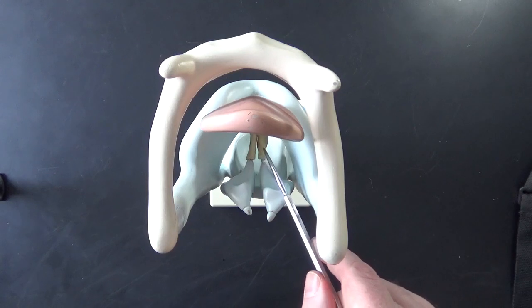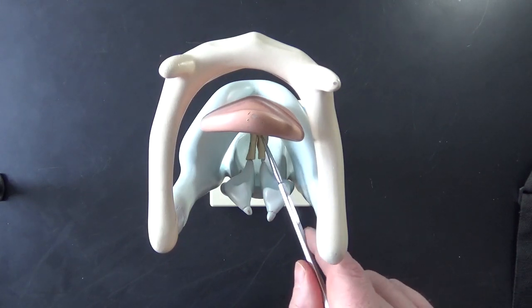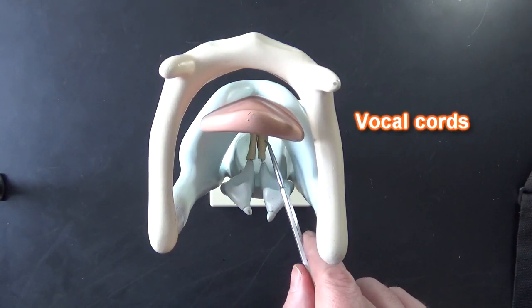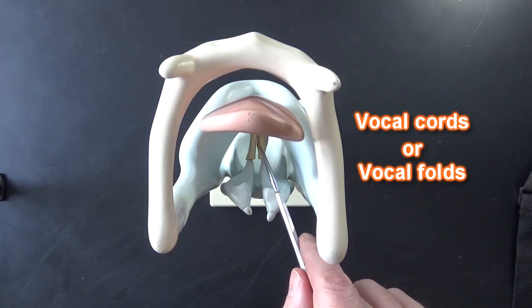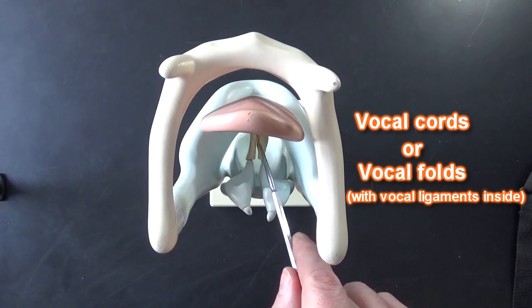Here you can see the arytenoid cartilages have the vocal cords attached and these are membranes that fold over the vocal cords. So we call those vocal folds oftentimes.